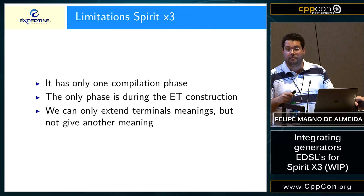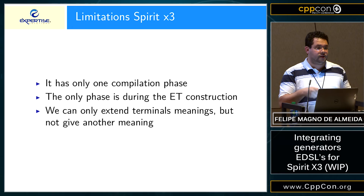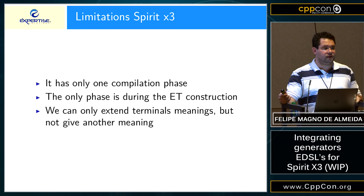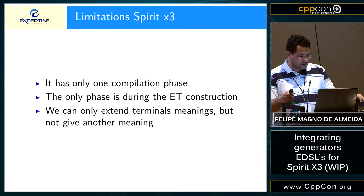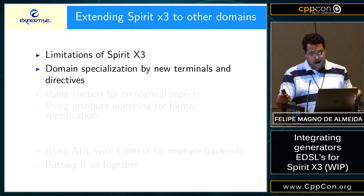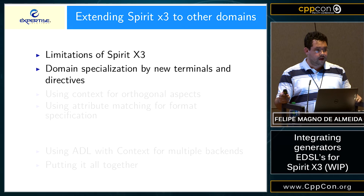We can only extend terminal meanings but cannot give them a completely different meaning in another domain. Because if a URL parser terminal is already a parser, we can't compile it to be something else — it's already a parser and its parse member function does the job. In Spirit V2 we could transform whatever we wanted to something else and then parse however we wanted. So domain specialization in X3 becomes writing new terminals and directives that apply to that domain-specific language.